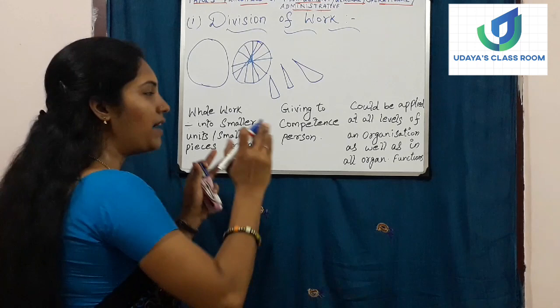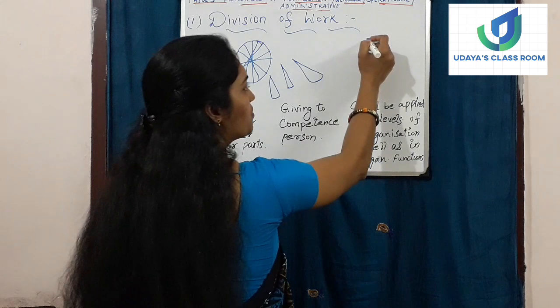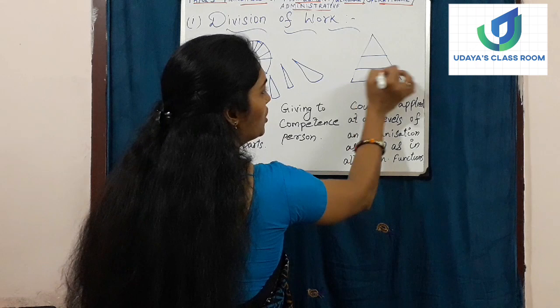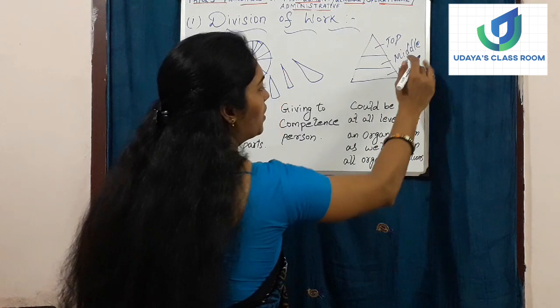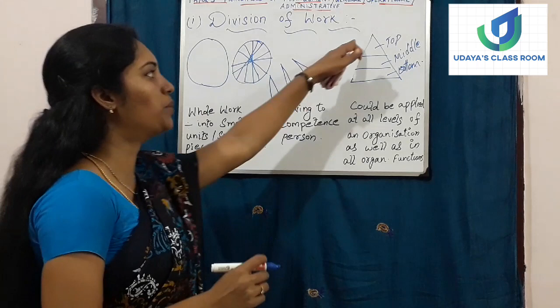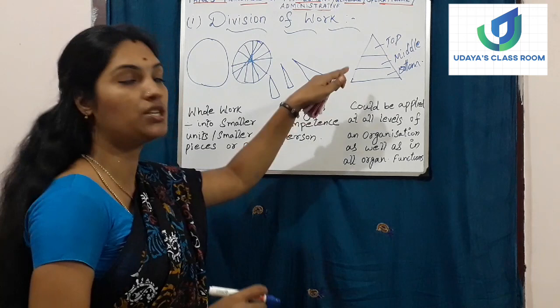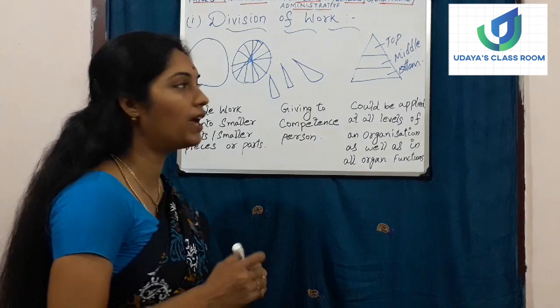This principle of dividing the whole work into smaller pieces can be done at all levels of management. We have studied three levels of management: top, middle, and bottom. So the same principle can be used across all levels of the organization.